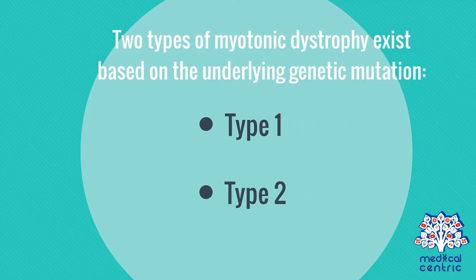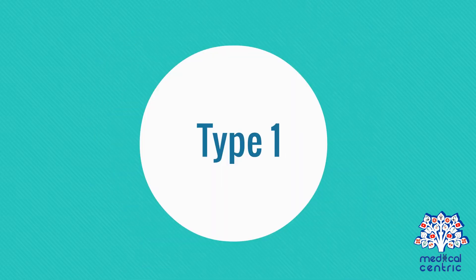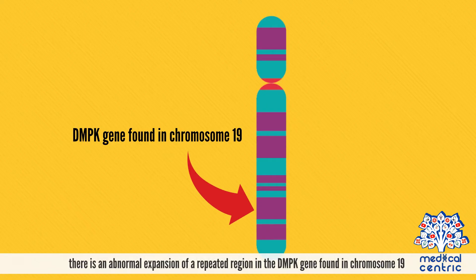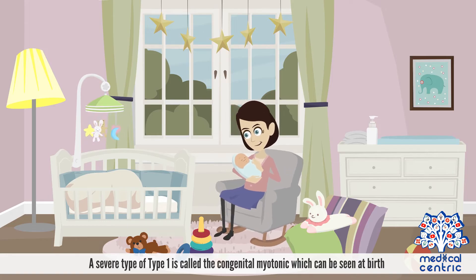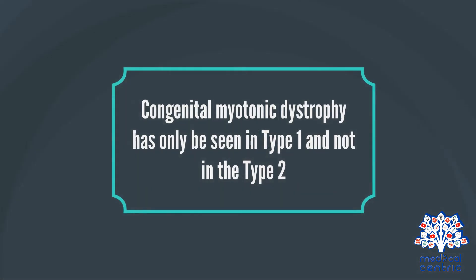Two types of myotonic dystrophy exist, based on the underlying genetic mutation: type 1 and type 2. In type 1, there is an abnormal expansion of a repeated region in the DMPK gene found on chromosome 19. A severe form of type 1 is called congenital myotonic, which can be seen at birth. Congenital myotonic dystrophy has only been seen in type 1 and not in type 2.